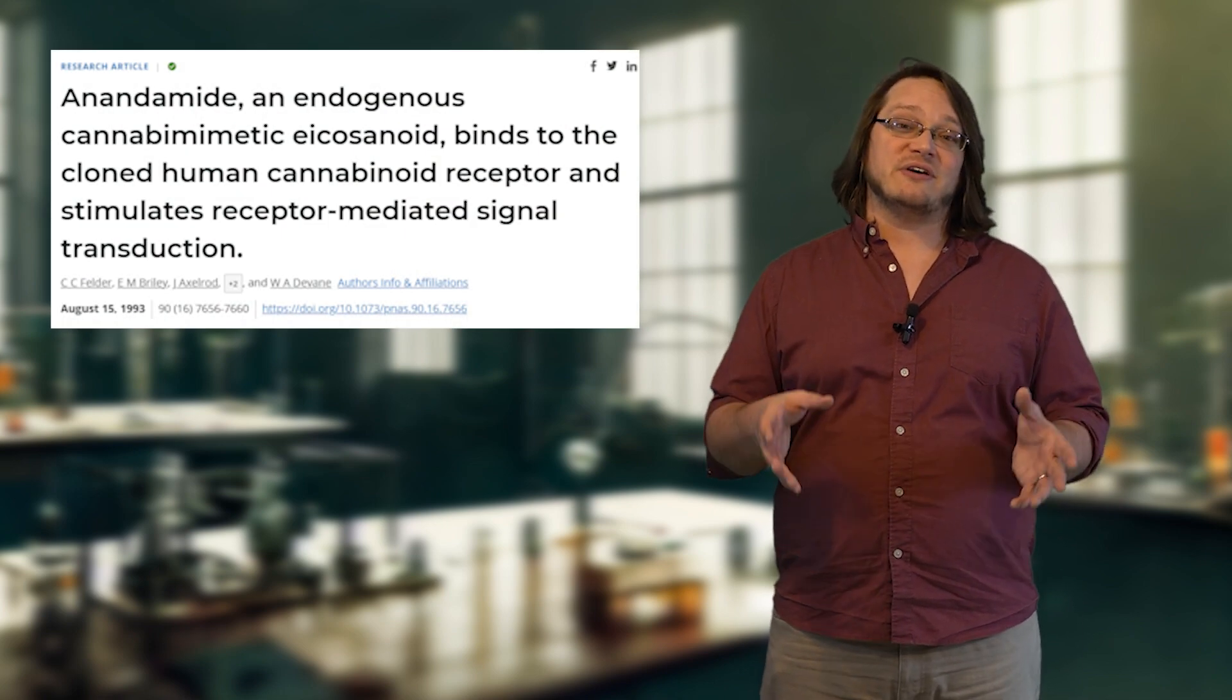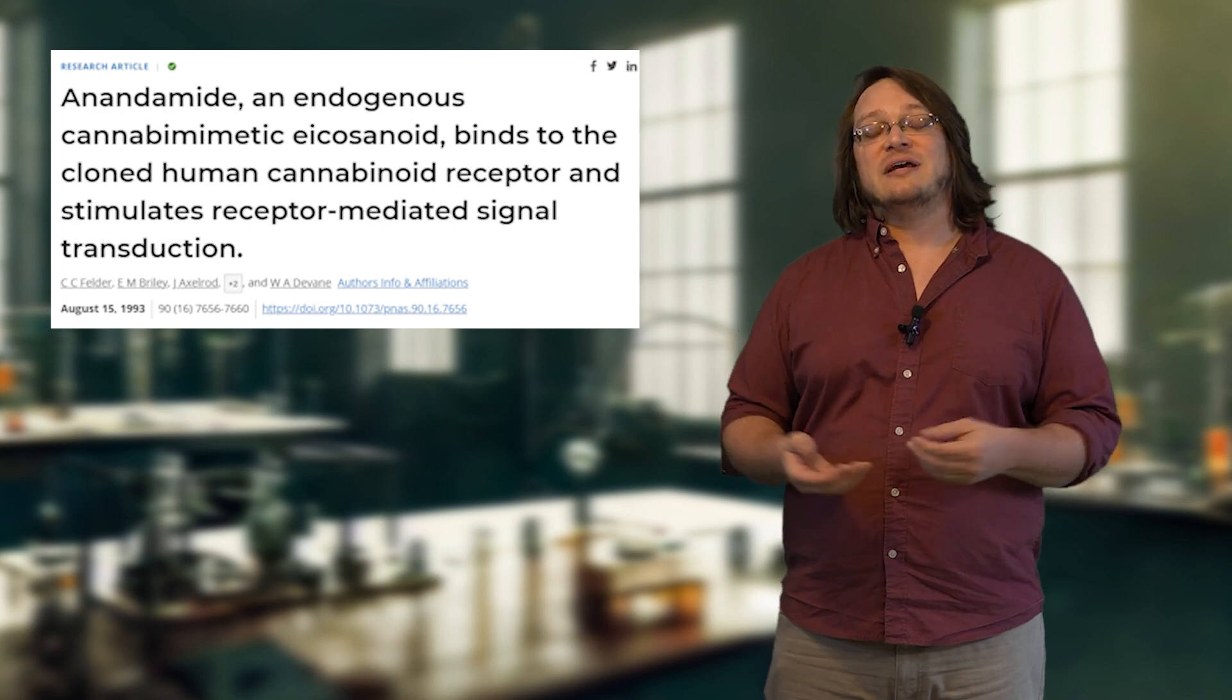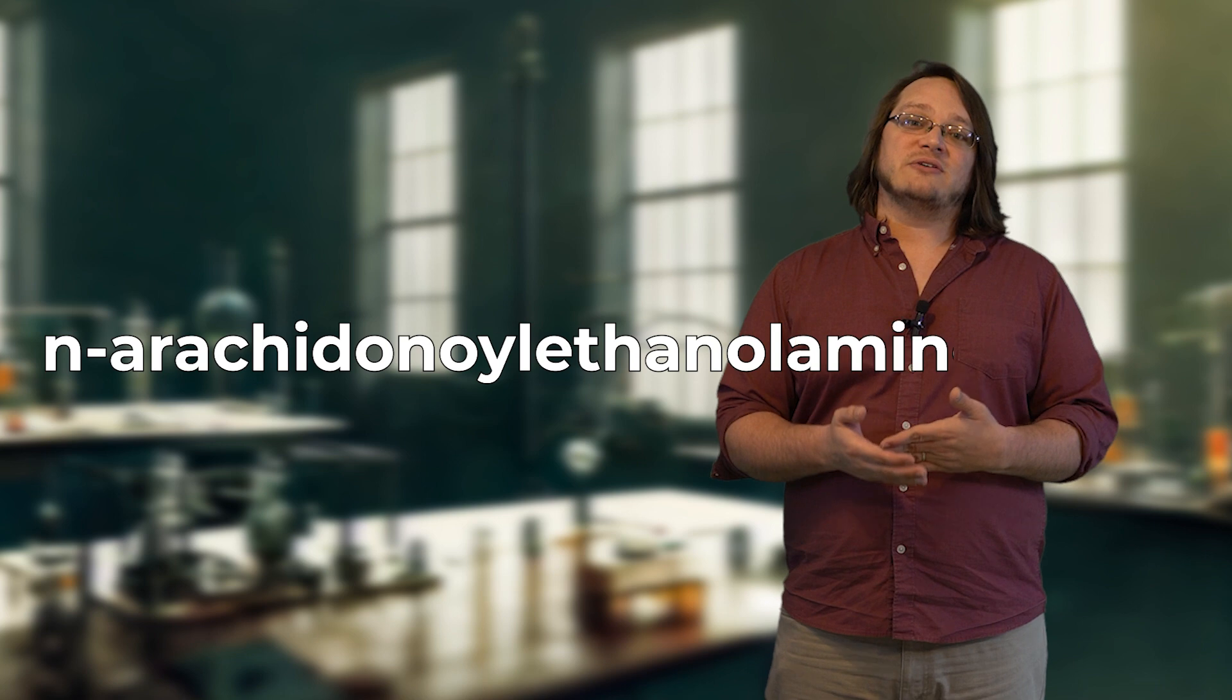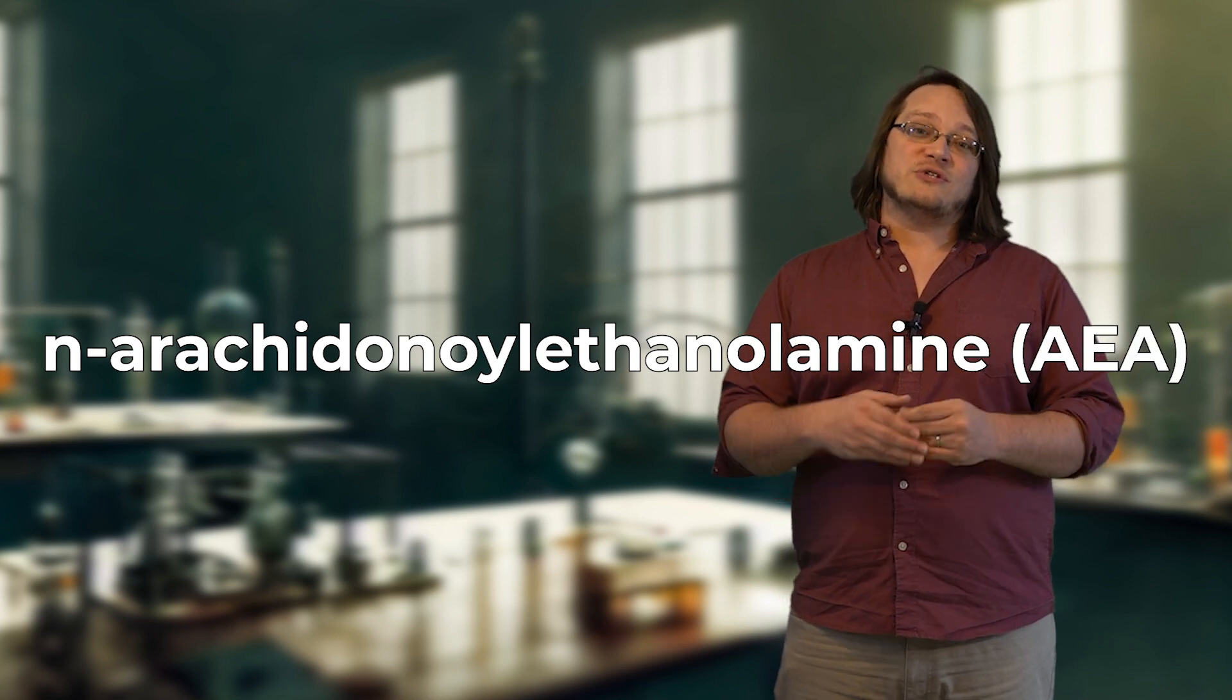In the early 90s, the CB2 receptor—so the second cannabinoid-type receptor—was discovered. And then also in the early 90s, we got the discovery of the first endogenous compound in the body to be known to interact with these receptors. So it was in the early 90s that the very first endocannabinoid was discovered: an endogenous compound that interacted with these cannabinoid receptors, and it was arachidonyl ethanolamide, also known as anandamide.